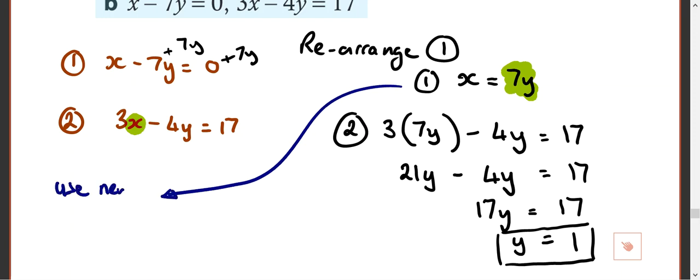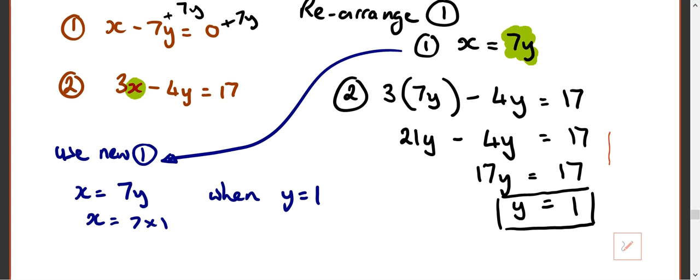Use the new number 1 in this case. x equals 7y. When y equals 1, so x equals 7 times 1, which means x equals 7. So they are my two. That's the solution to this system of equations.